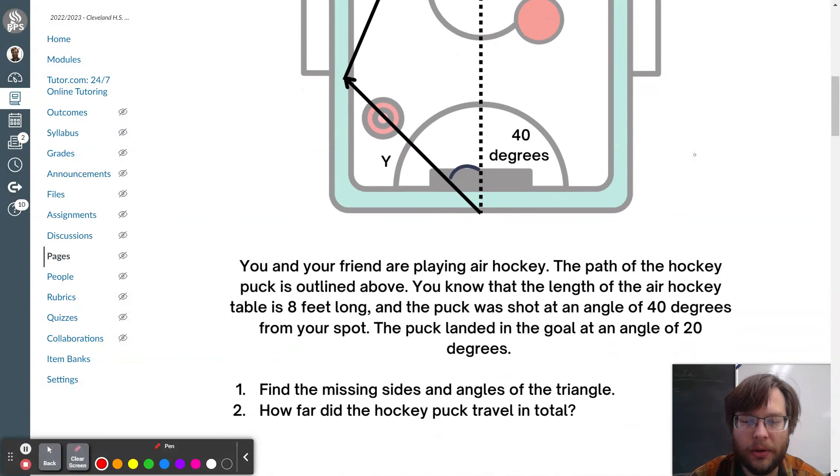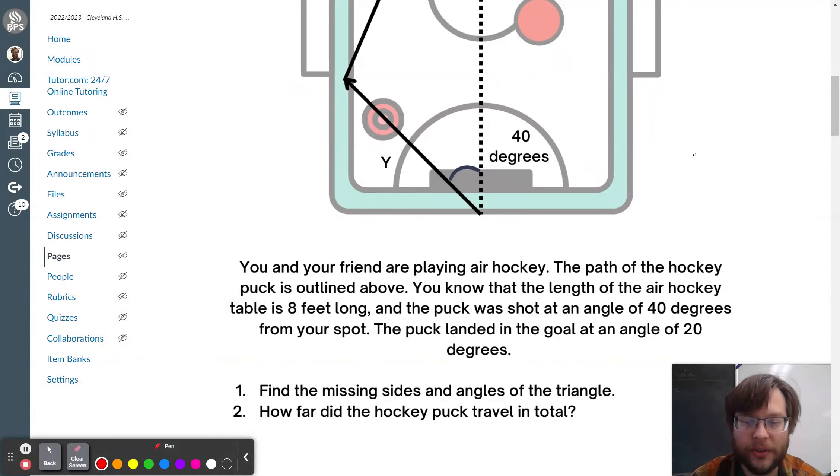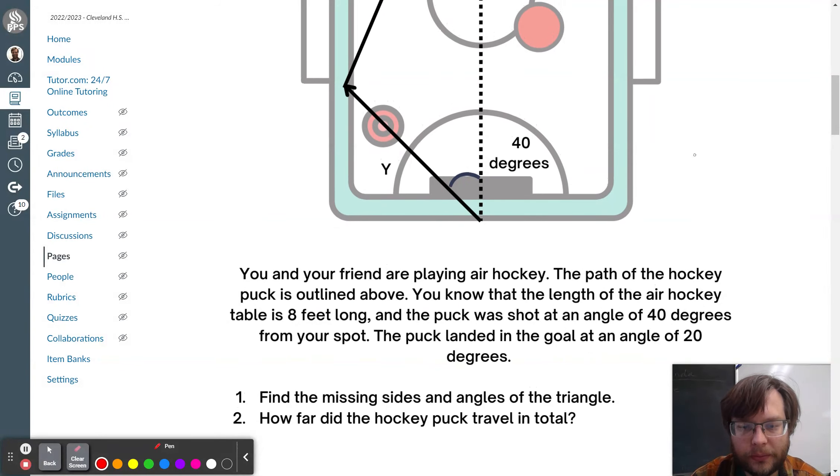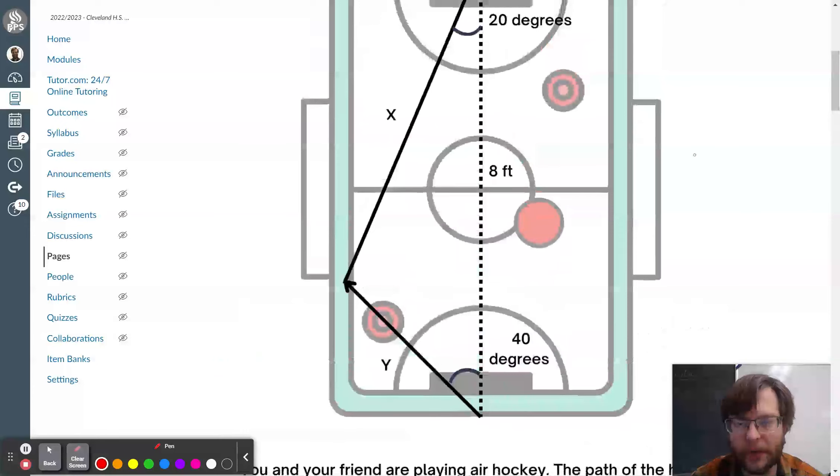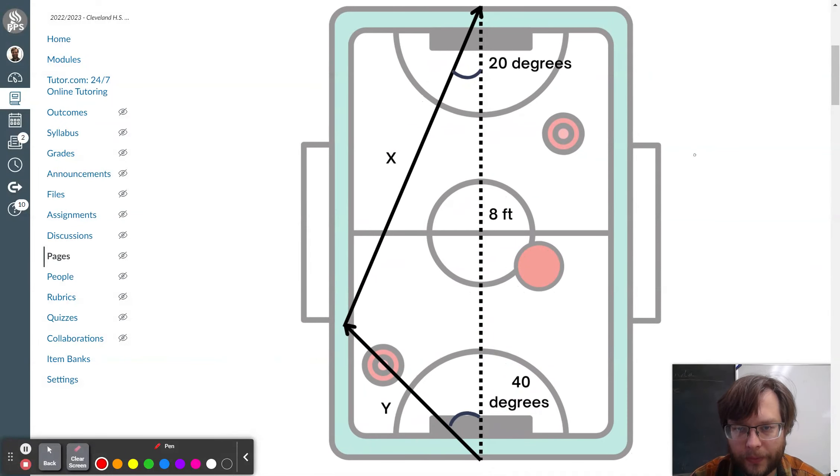So we've got here a picture of air hockey. We need to find the missing sides and angles of the triangle. The total distance that the hockey puck traveled. Looks like we've got everything we need.